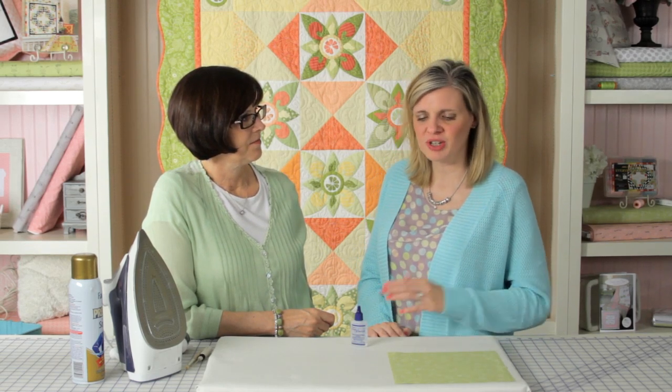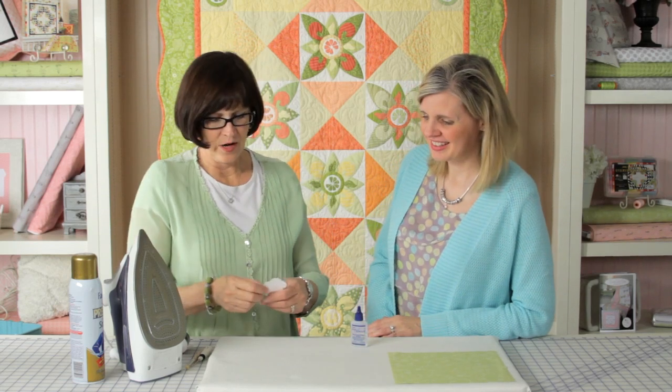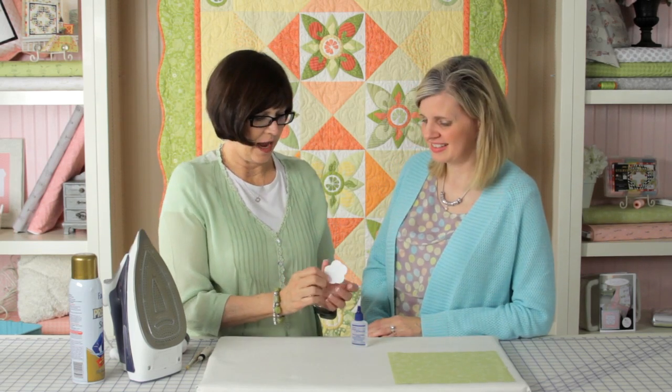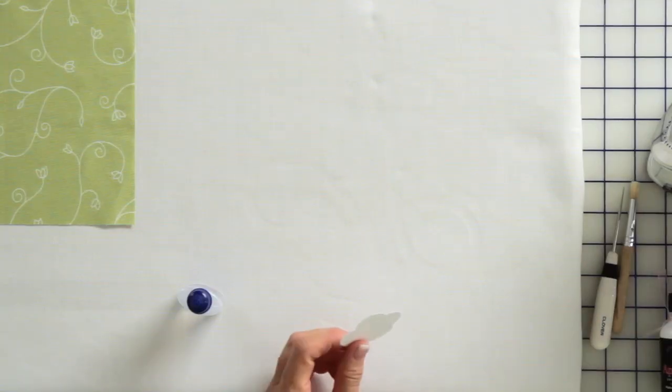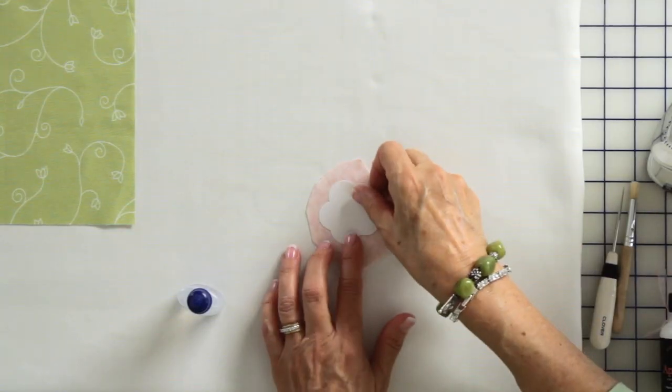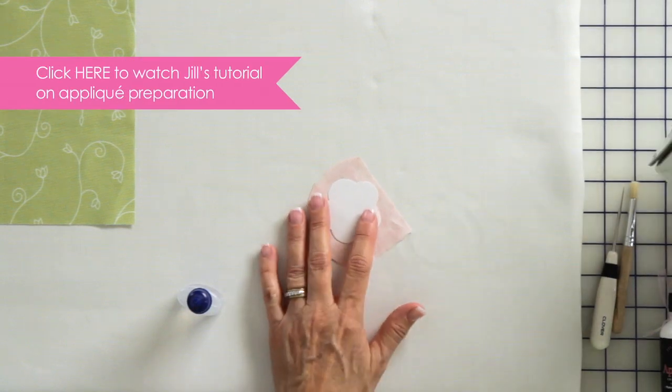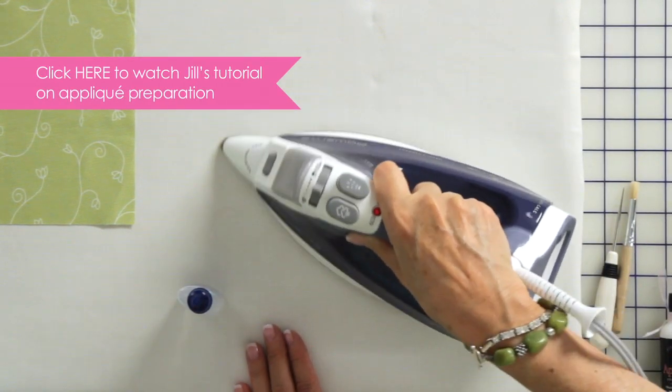I have a shape here that has a little inside curve, see that little inside point? That's the shape I want to show you today because the fray check is important for this shape. If you want to see what I'm doing, refer to the other videos on the basic applique preparation.